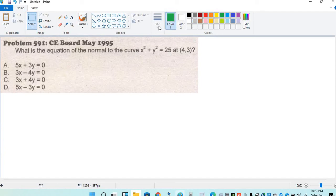So, next problem. What is the equation of the normal to the curve x squared plus y squared equals 25 at 4, 3?